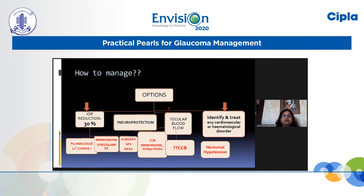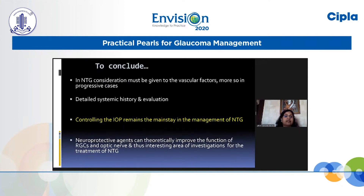It is important to send patients for cardiovascular evaluation to identify nocturnal hypotension or related problems. The role of other agents like calcium channel blockers and Ginkgo biloba is still not proven. To conclude: in NTG, consideration must be given to vascular factors, especially in progressing patients, after ruling out diurnal fluctuation and thin CCT. Detailed systemic evaluation and history are essential. Controlling IOP remains the mainstay of NTG management; however, new neuroprotective agents are an exciting area for future investigation.